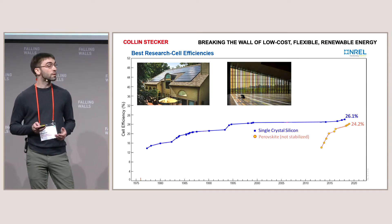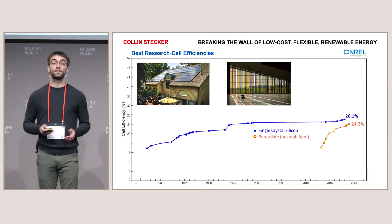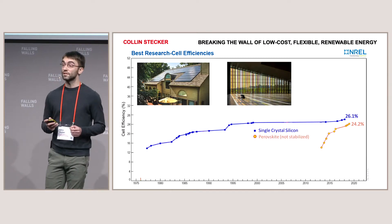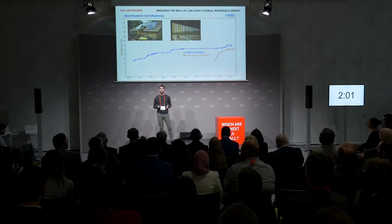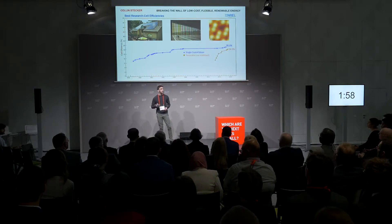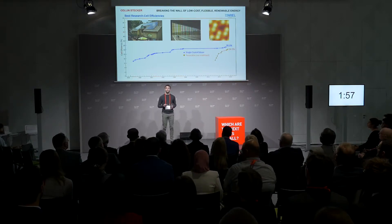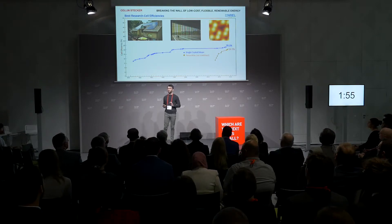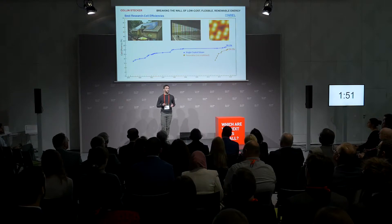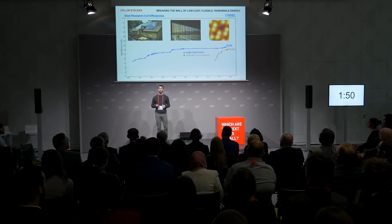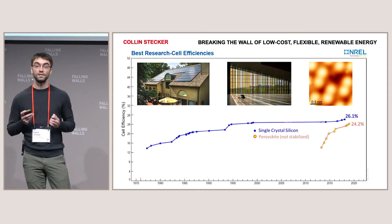My unique approach examines perovskites at the atomic scale to better understand how defects in the material can affect solar device performance and material stability. Here, in this image I took, the bright spots are individual atoms, and the dark area is an empty space where there's an atom missing. This is called a vacancy defect.